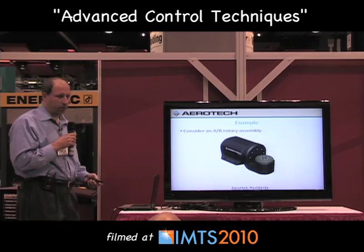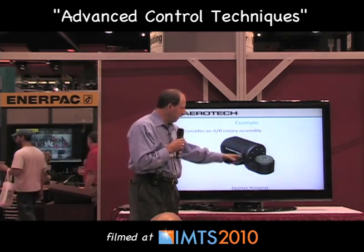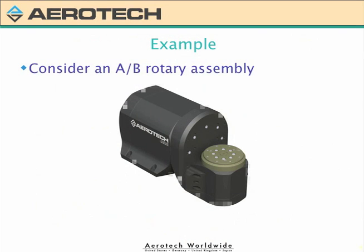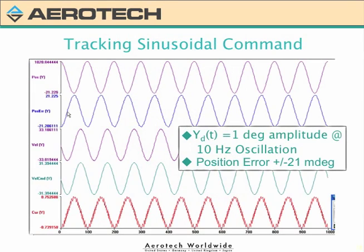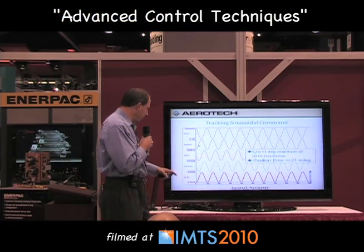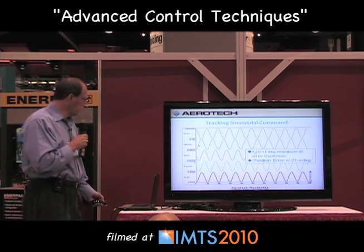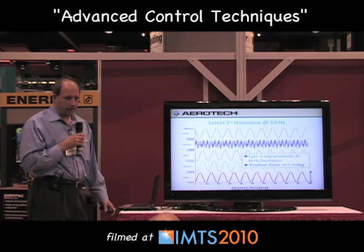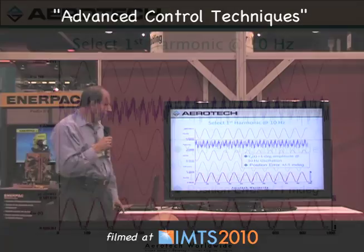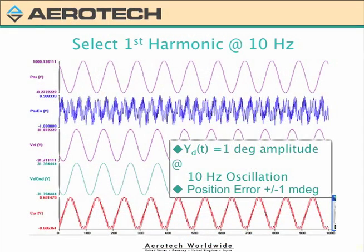Here's an example. Consider a typical AB stage where I may want to rotate A and B at the same time. There's a mass imbalance, and as I rotate one axis it will affect the motion of the other. Assuming I put in a simple 10 Hz oscillation into the A axis — moving one degree at 10 Hz — I look at my error signal and I'm at about 21 milli-degrees plus and minus. I then put in the filter at 10 Hz and I look at the resulting error: I've now taken it down to plus or minus one milli-degree.